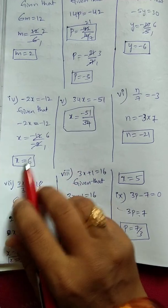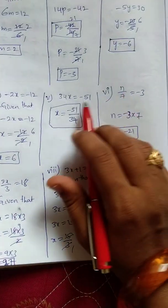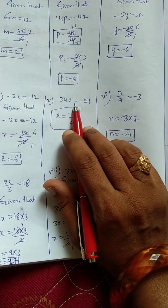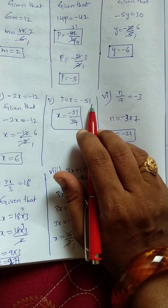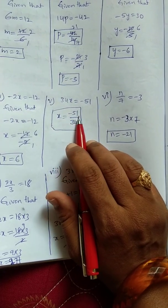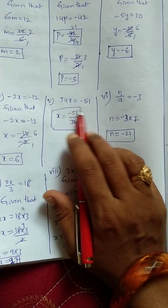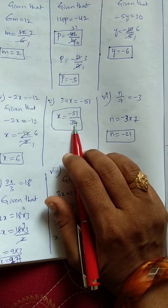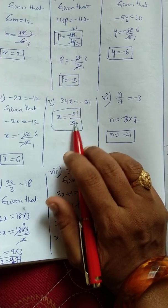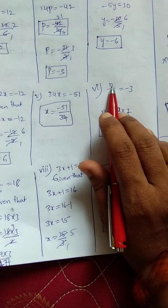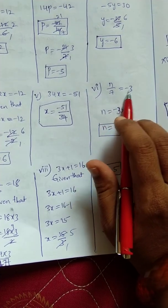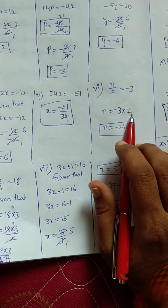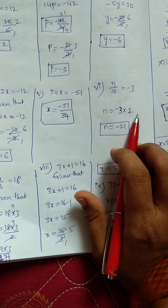Next, 34x equals minus 51. x equals minus 51 by 34 — transpose of multiplication gives division, so x equals minus 51 by 34. Next, n by 6 equals minus 3. So n equals minus 3 into 6, that is minus 18. Wait — n equals minus 3 into 7, n equals minus 21.